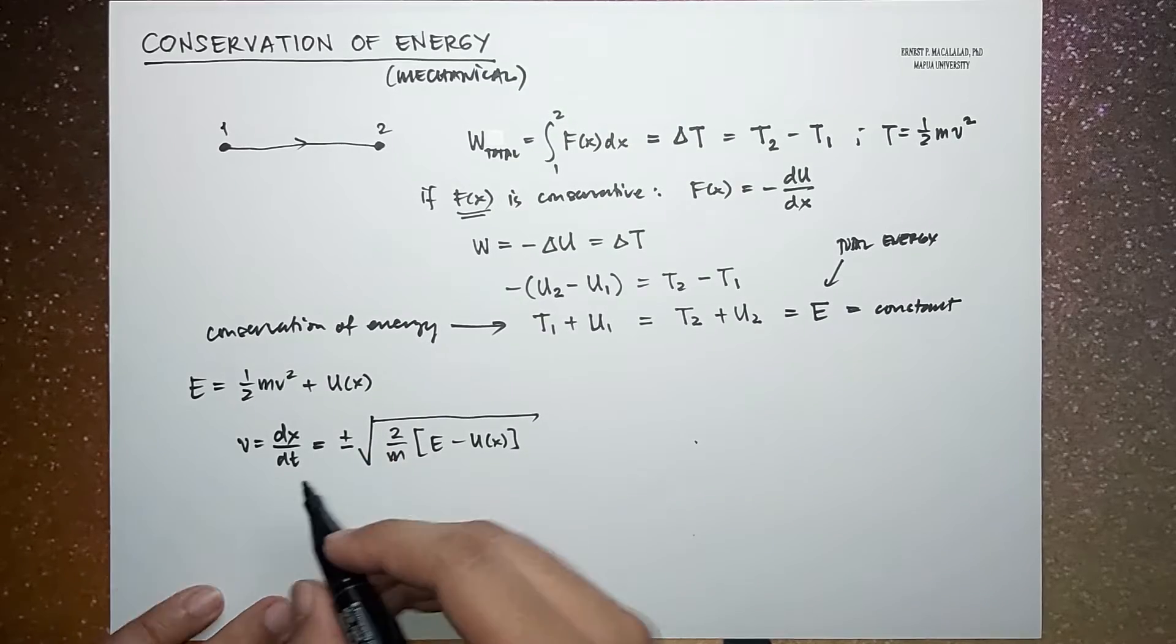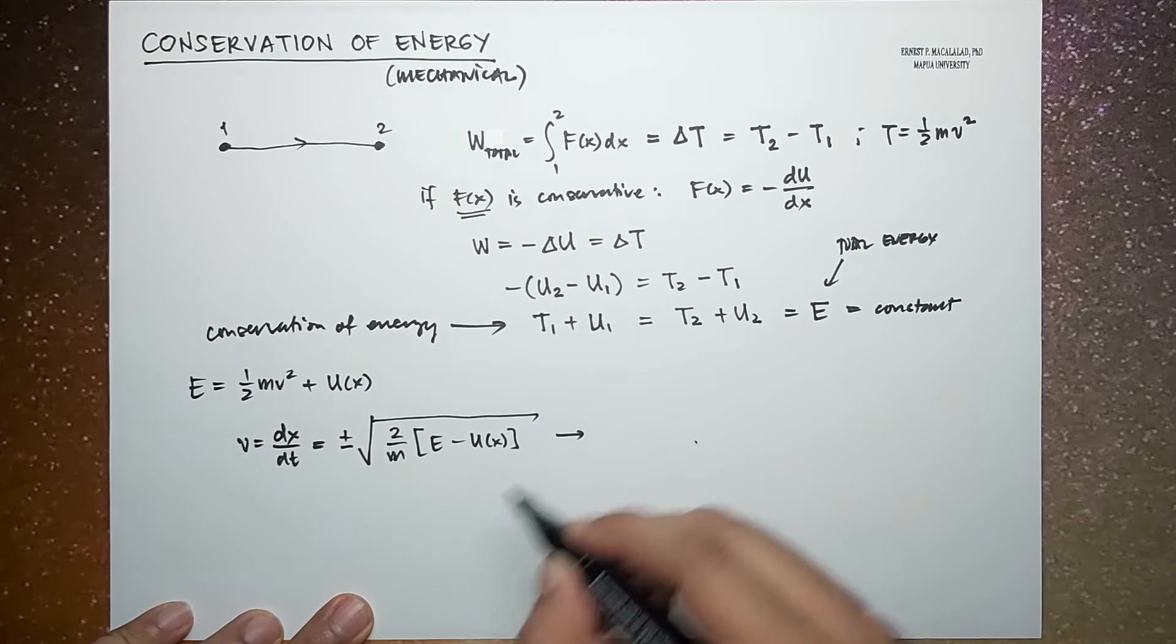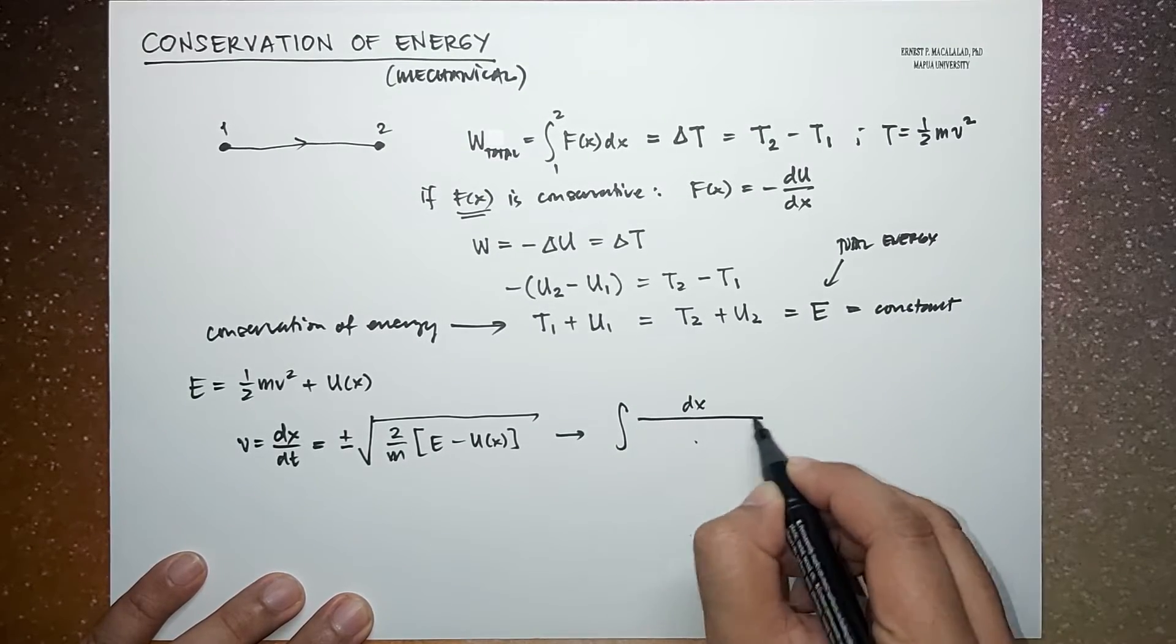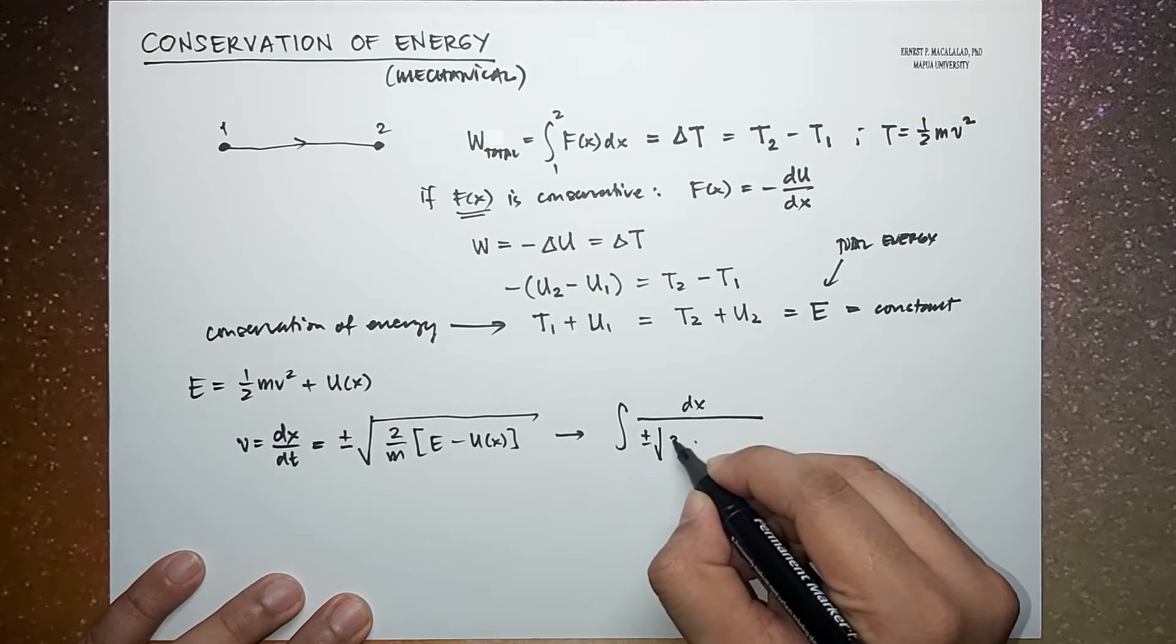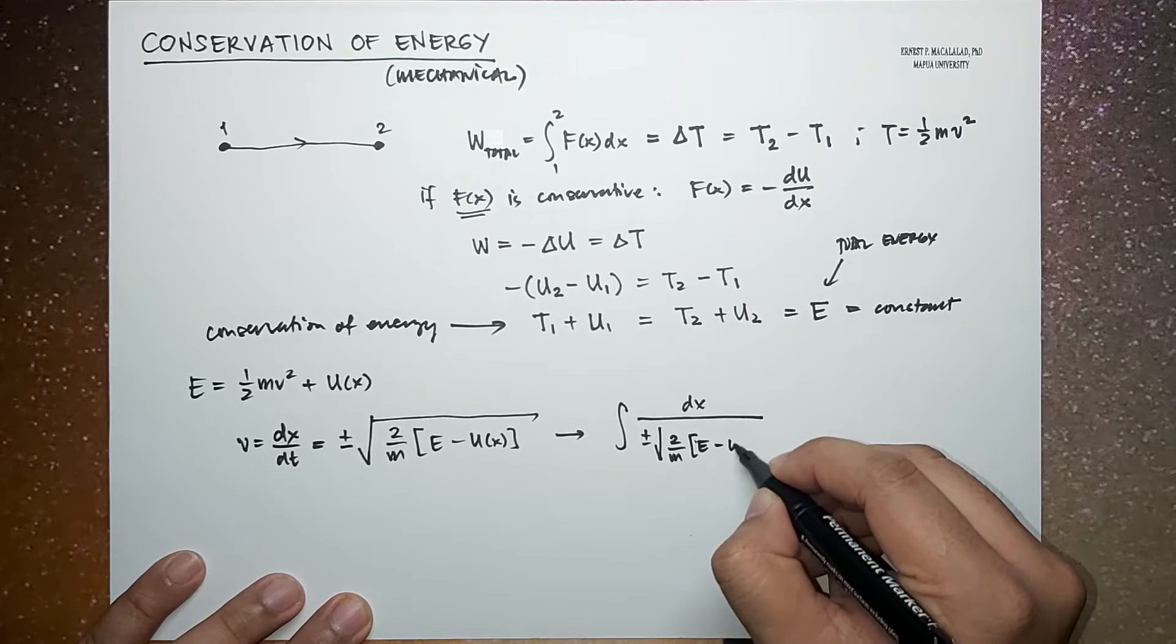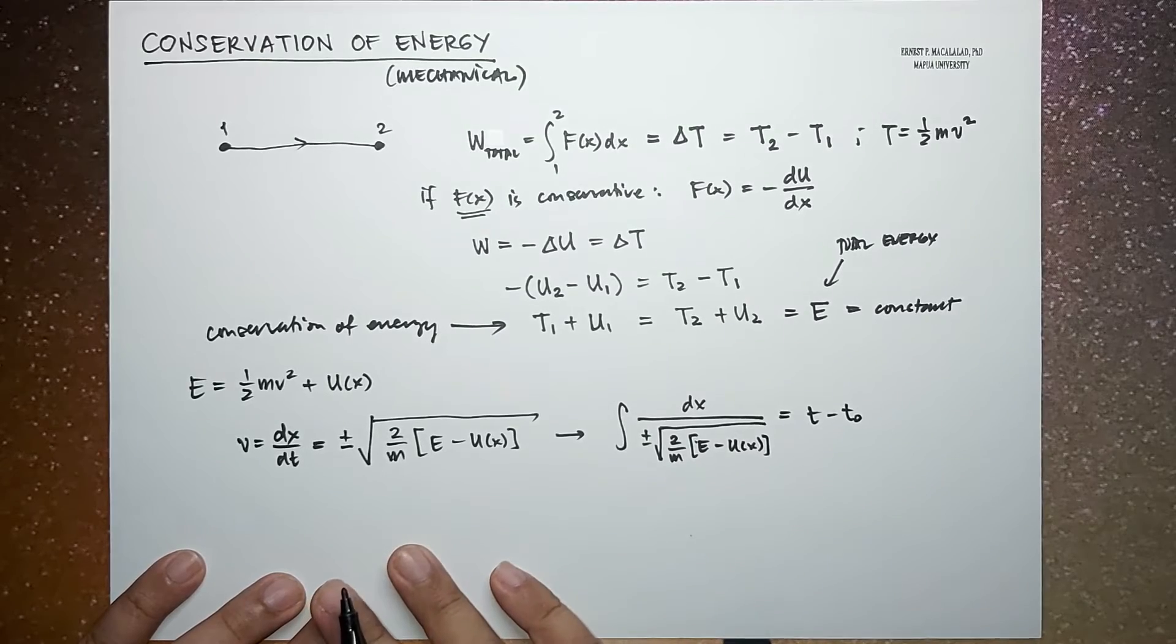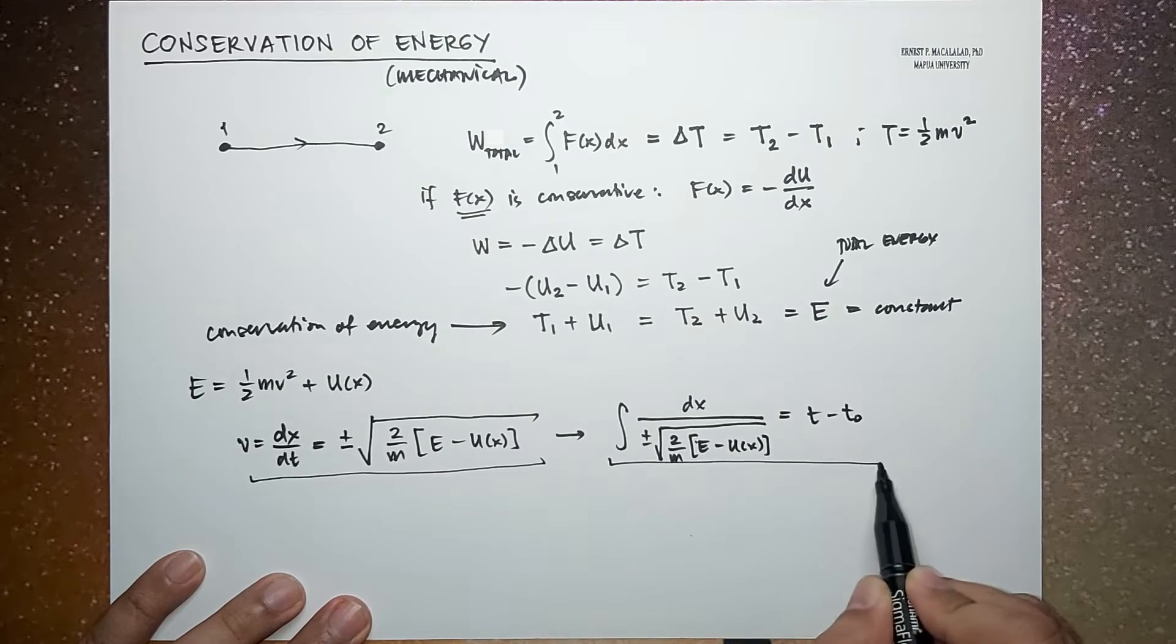And by integrating this, you now have integral of dx over plus or minus square root of 2 over m times E minus U as a function of X, and is equal to t minus t₀. Now, these two equations tell us several things.